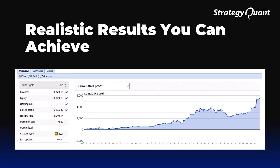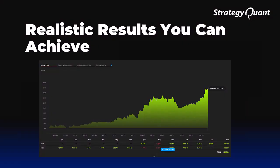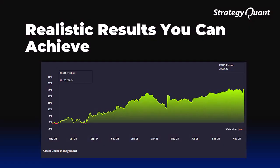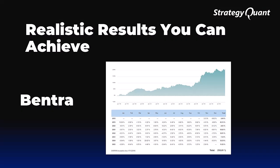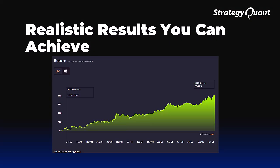What can you achieve with a quality portfolio? Here you can see examples of realistic results — not extreme or unrealistic equity curves, but practical, measurable outcomes created through diversification and proper risk management. A strong portfolio can continue growing even during periods when individual strategies struggle. The Bentra project is a great example of how a long-term stable portfolio can perform. When you look at the equity curve, you can clearly see steady growth without large destabilizing drawdowns. Strategies complement each other, reducing volatility and creating a foundation that can scale over time.